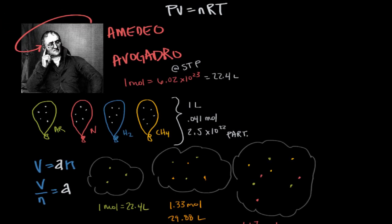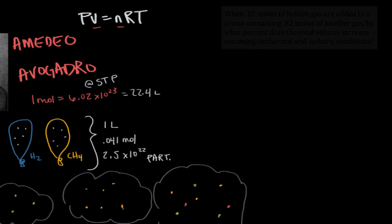Avogadro's law validates the V in part of the ideal gas equation because the volume and the moles are directly proportional to each other. So let's put this principle to work in an example.